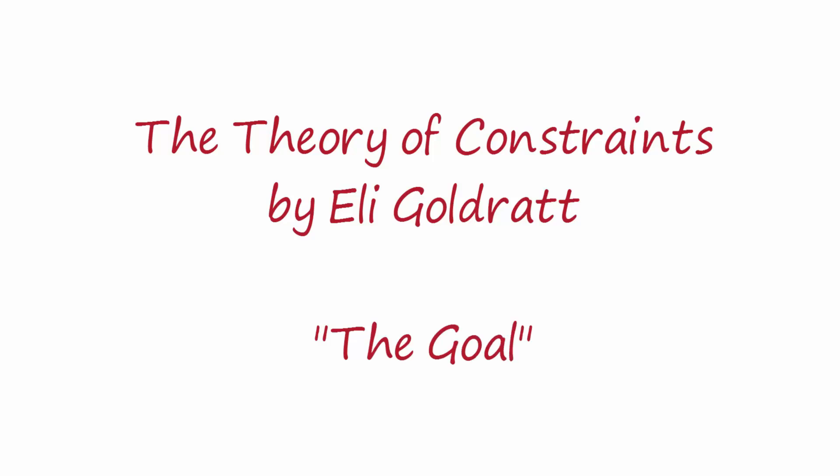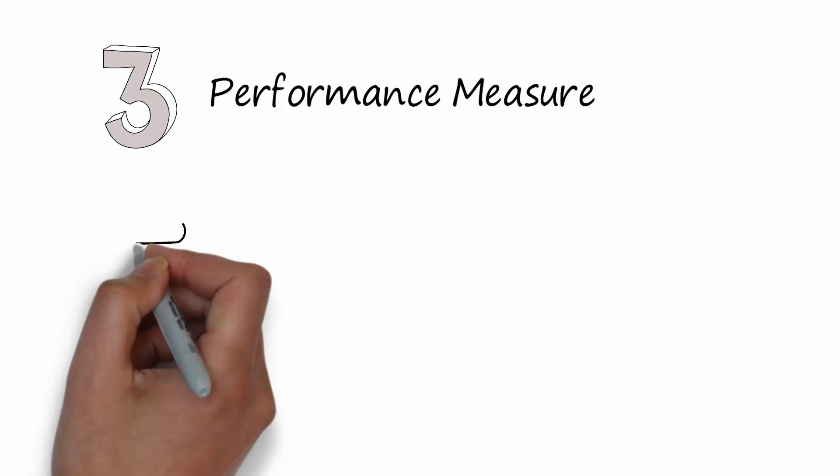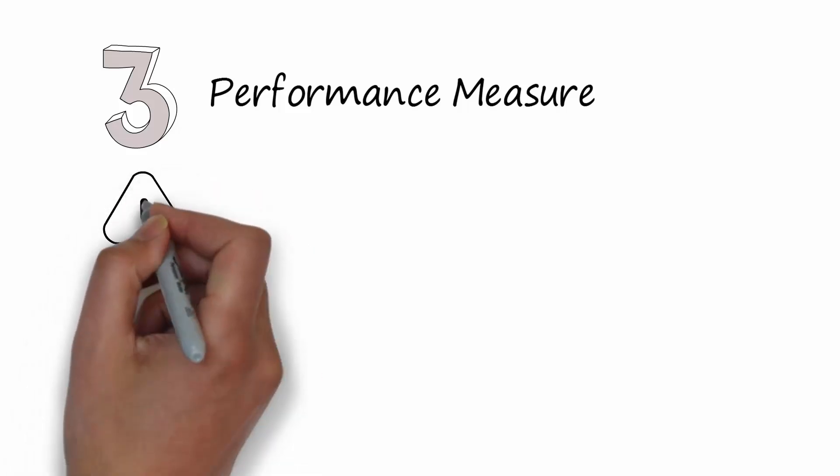The theory of constraints was theorized by Eli Goldratt in his famous book The Goal. Eli Goldratt suggests using only three performance measures to manage production and business. Then, he suggests to improve only on a few critical processes that really regulate the production flow.